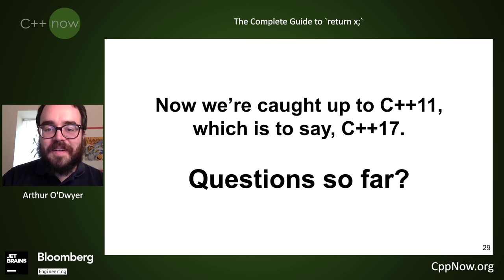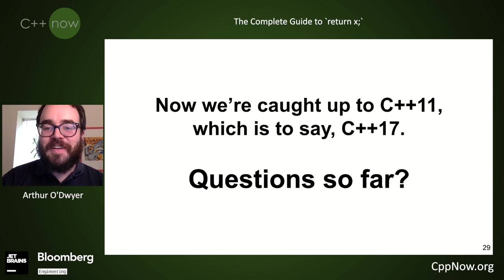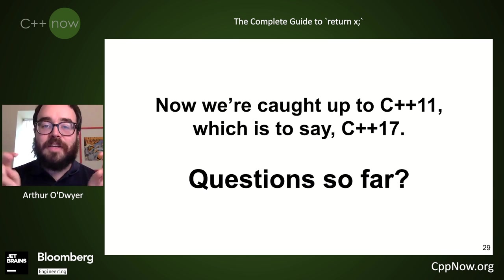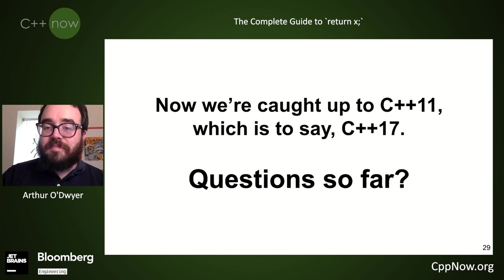Q: 'Is return x better than return x+1?' It depends. x+1 is a prvalue — not an lvalue and not an xvalue. So 'return x+1' was affected by the C++17 changes to prvalue semantics, sometimes known as guaranteed copy elision or deferred prvalue materialization. So it really does depend on the context.